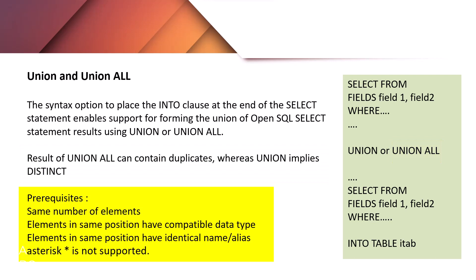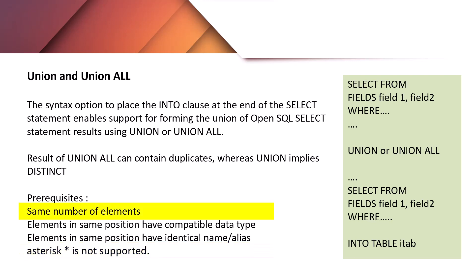Let's look at the three prerequisites to use UNION and UNION ALL. First, use of the asterisk (*) after the keyword SELECT is not supported — you must use an explicit field list. Second, the number of columns in both SELECT queries must match. Third, the matching columns must be in the same order and of a compatible type.